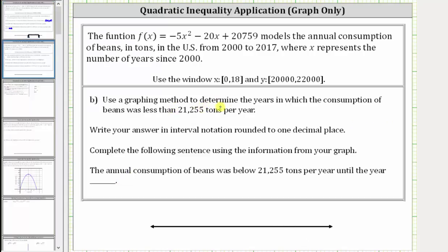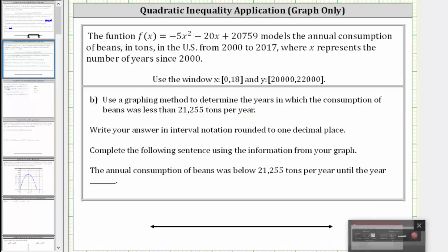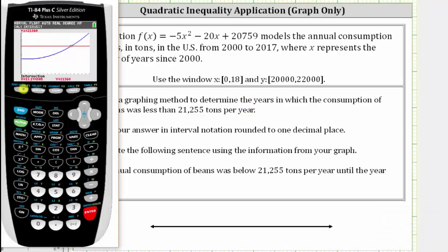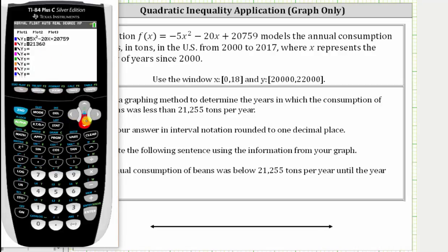Now let's take a look at part B. For part B, we want to determine the years in which the consumption of beans was less than 21,255 tons per year. So let's go back to the calculator, press y equals, clear out y two, arrow down to y two, press clear, and enter y two equals 21,255, then press graph.